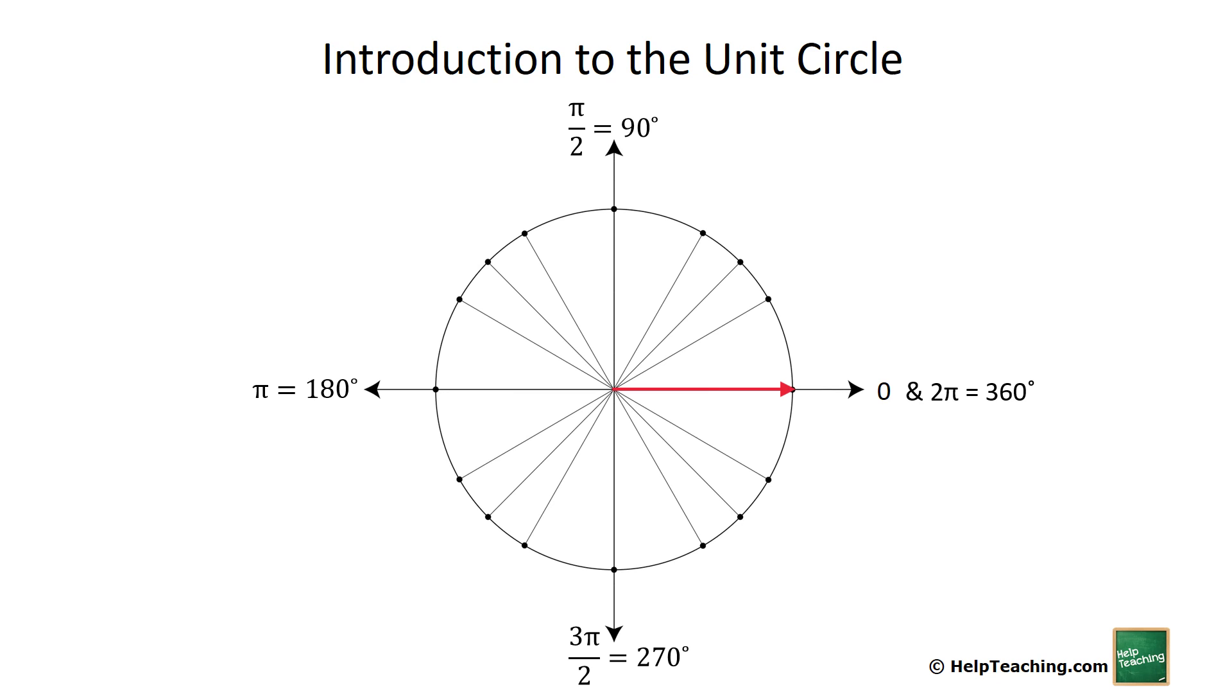Now let's break those down into half the size of angles again. This time we'll do 45 degree angles. This will give us pi over four, that's half as much as pi over two, two pi over four, three pi over four.